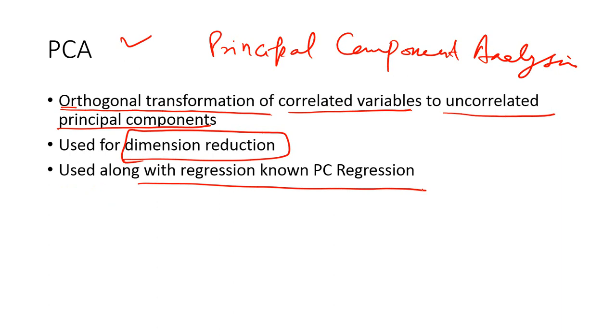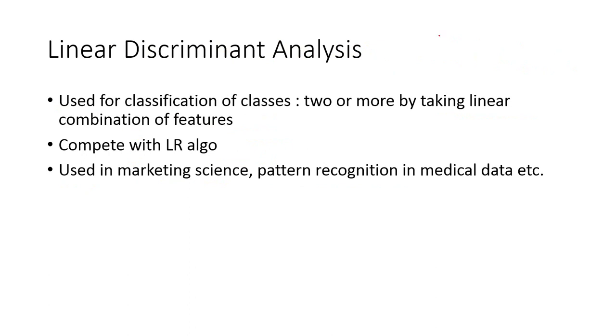It's also used for regression purpose, so we call that as principal component regression. What it does is it first uses PCA to reduce the number of features and then it uses linear regression, which is known as principal component regression.